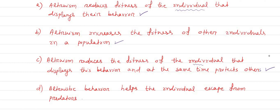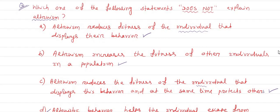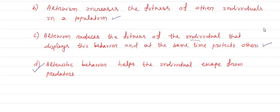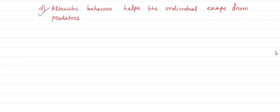Option D: Altruistic behavior helps the individual escape from predators. This is not altruistic behavior, so option D is the incorrect statement regarding altruism. The correct answer is option D.